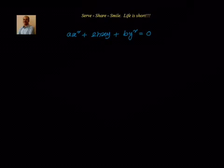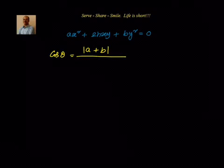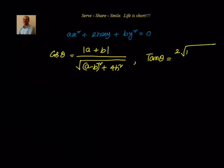Let us say that ax² + 2hxy + by², which is a second degree homogeneous equation, represents a pair of straight lines. We want to find out the angle between these two lines in terms of a, b, and h. The formula is given by cos θ = |a + b| / √[(a - b)² + 4h²]. I can also write tan θ = 2√(h² - ab) / (a + b). Let us see how we can derive this.